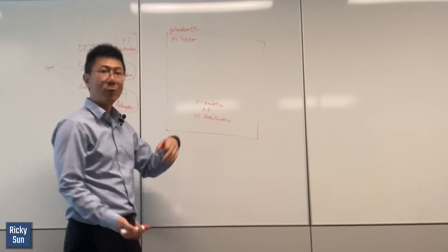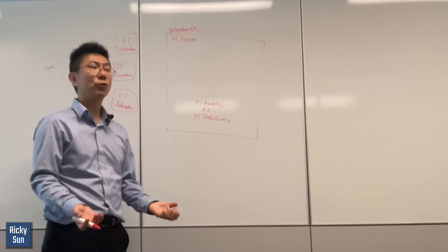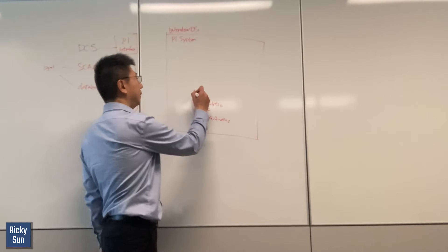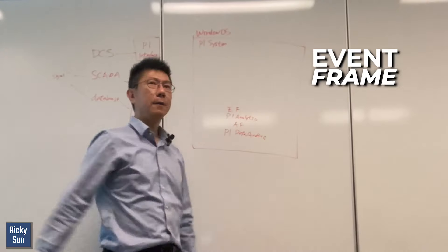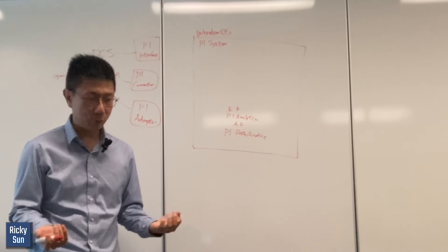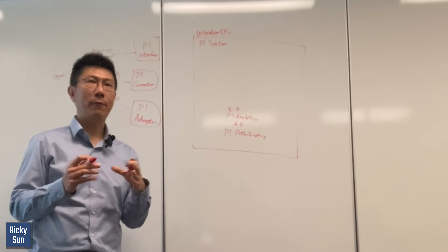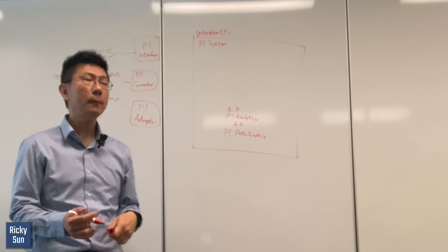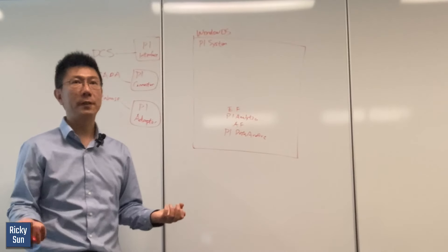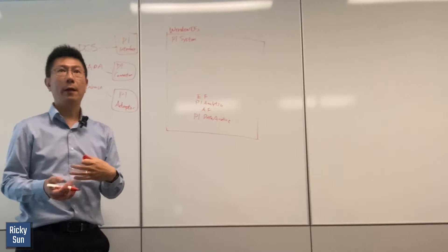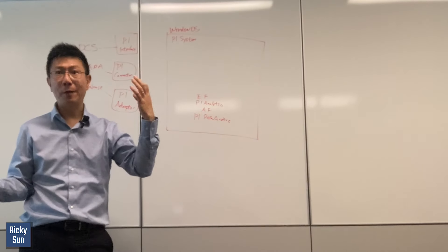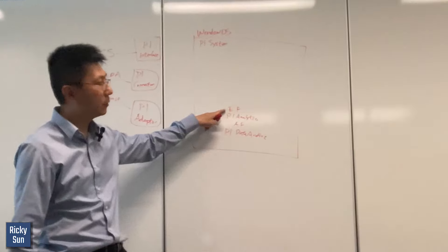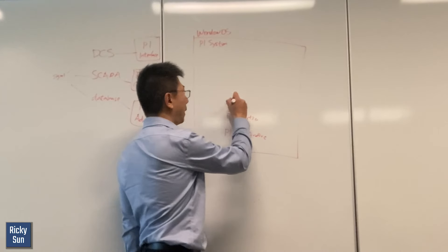Once you create a calculation, you can also create a tag to store the result continuously. On top of that we have event frames. For example, if you have a tank and you don't want the level to go over 80%, you can set an event frame to trigger when it's above 80%. It captures the start time when the level exceeds 80%, and stops the event frame when it drops back below 80%.